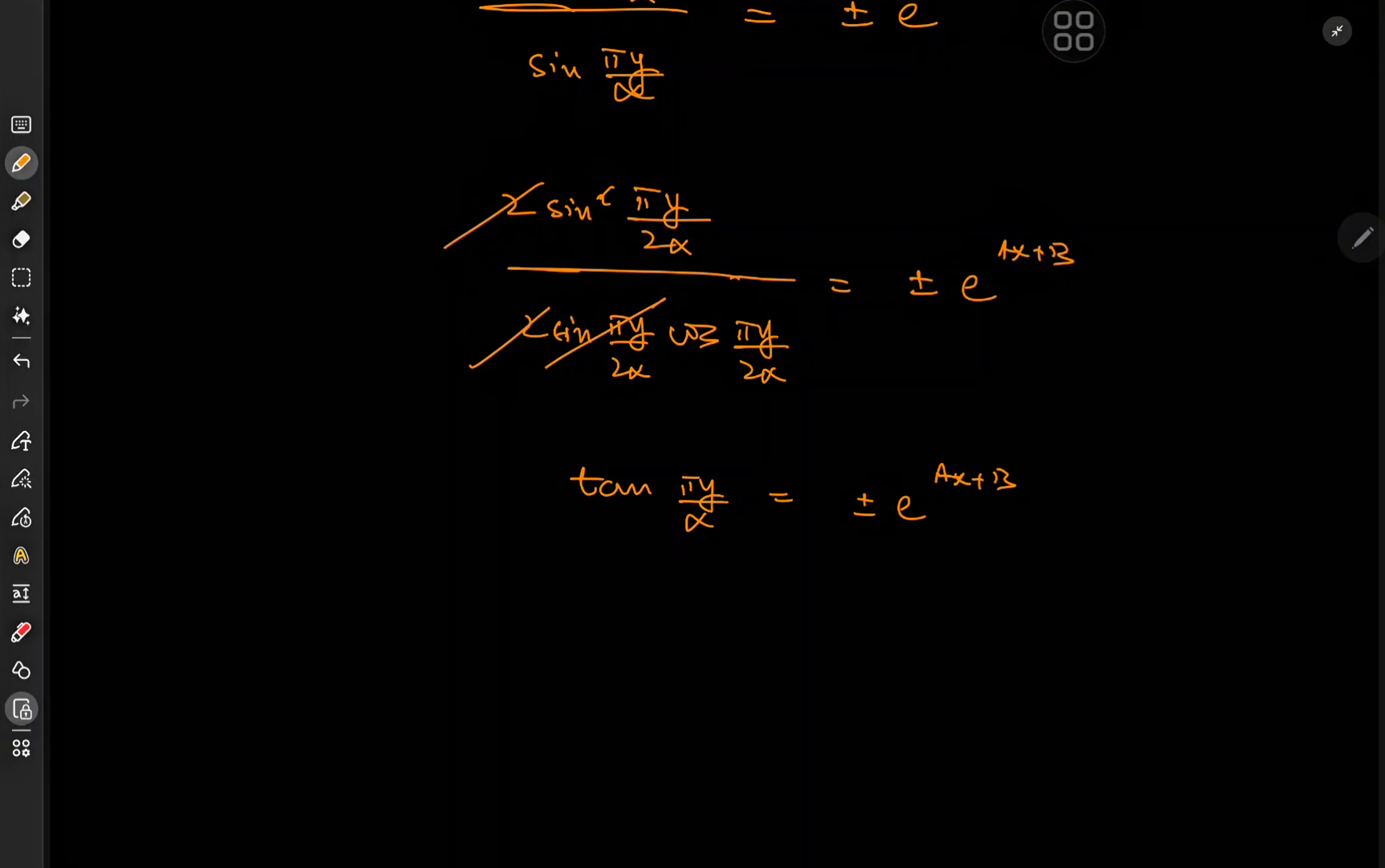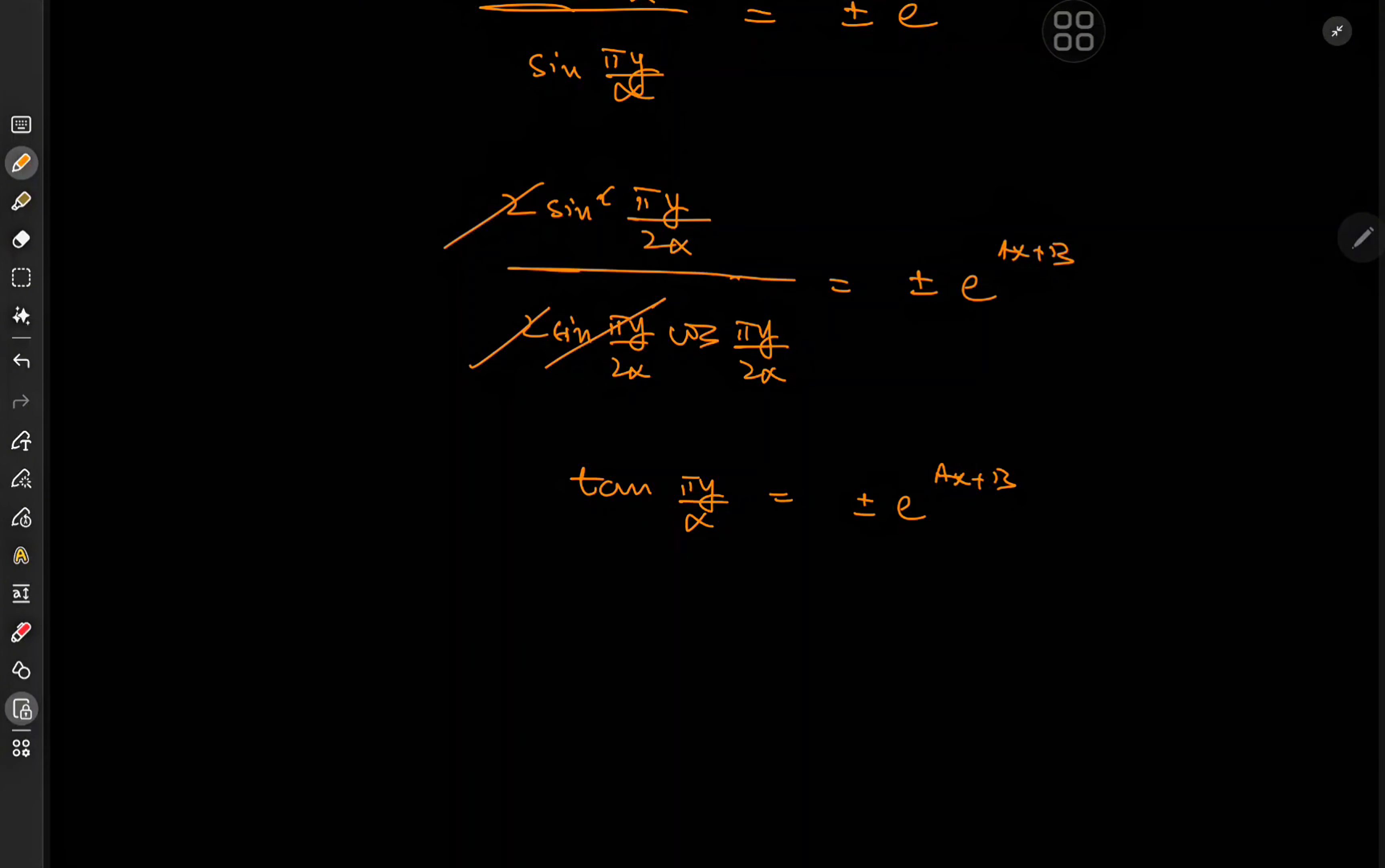normally I leave it at an implicit relation between y and x, but this time we can solve it explicitly. This implies that y over alpha... y itself should equal... I feel like I'm missing a factor of 2 somewhere. Oh yeah, this is it. It was 2 alpha. So we have y equal to 2 alpha over pi times the arctangent of this exponential function, arctangent of plus or minus e to the ax plus b, which I think looks absolutely gorgeous.